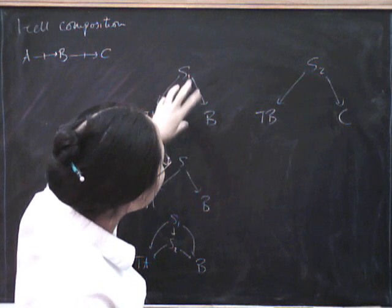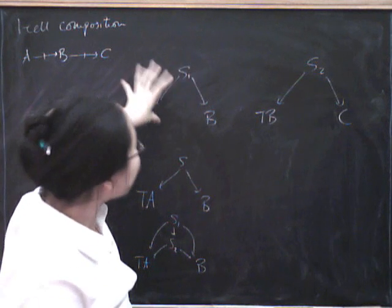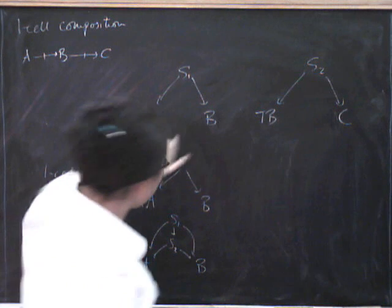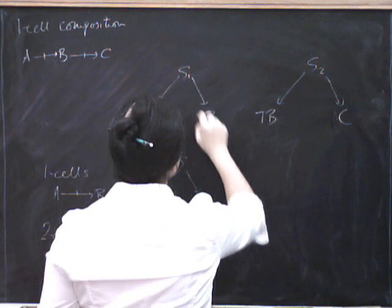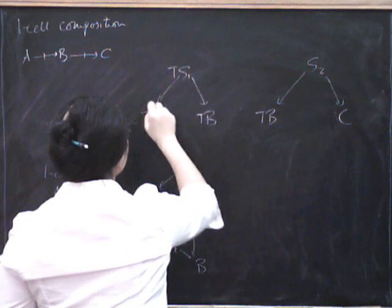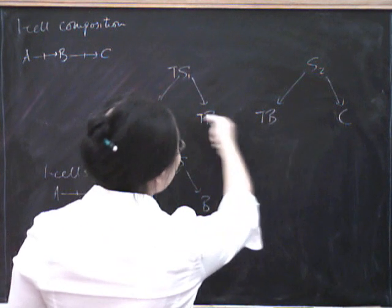But what can we do? We can hit this entire T-span by T. And then they'll match up in the middle. So if I hit that whole thing by T, what I get is T here. I get T here. And I get T-squared here. And now I can put them together.